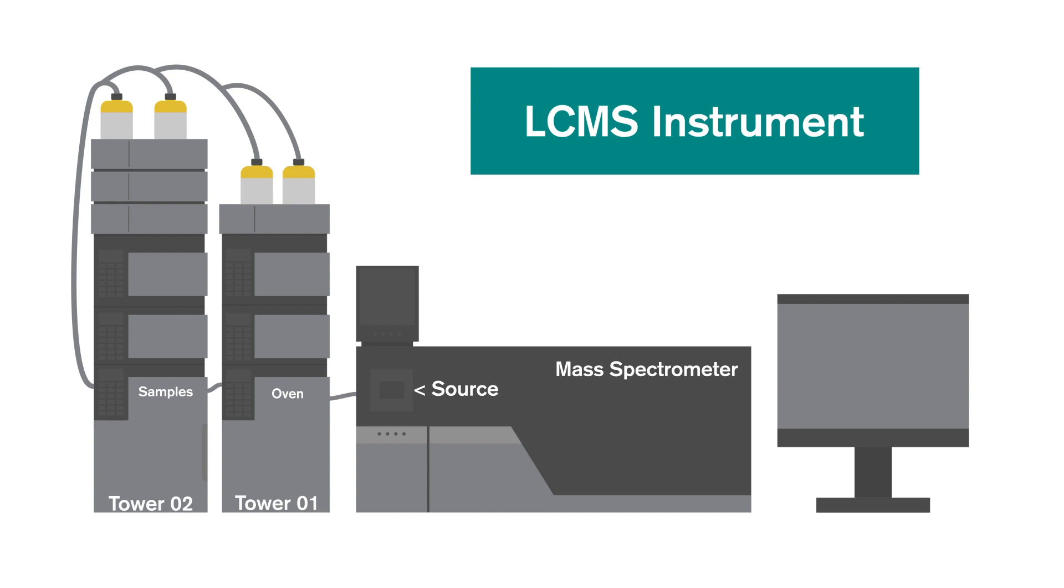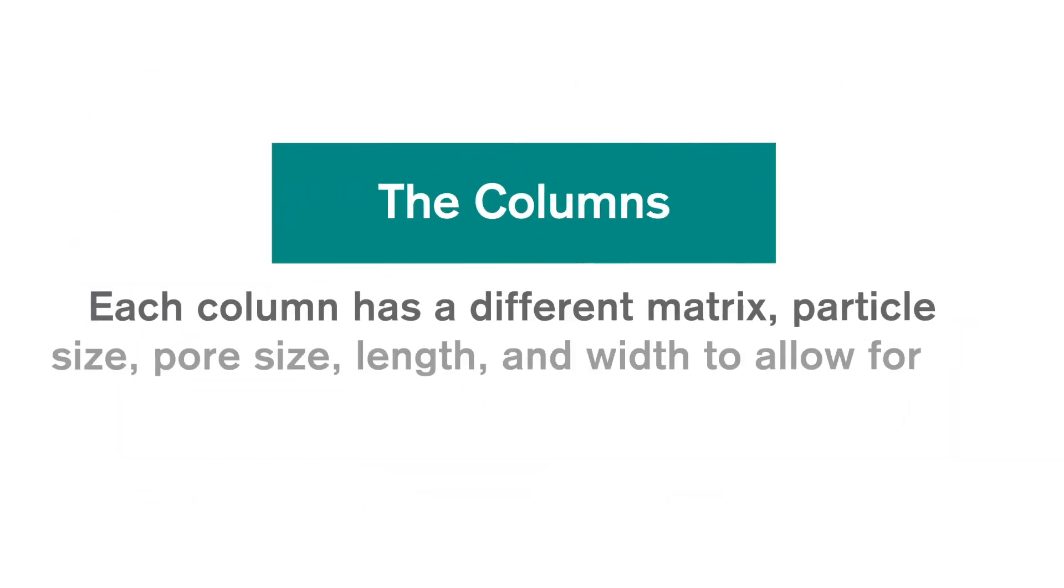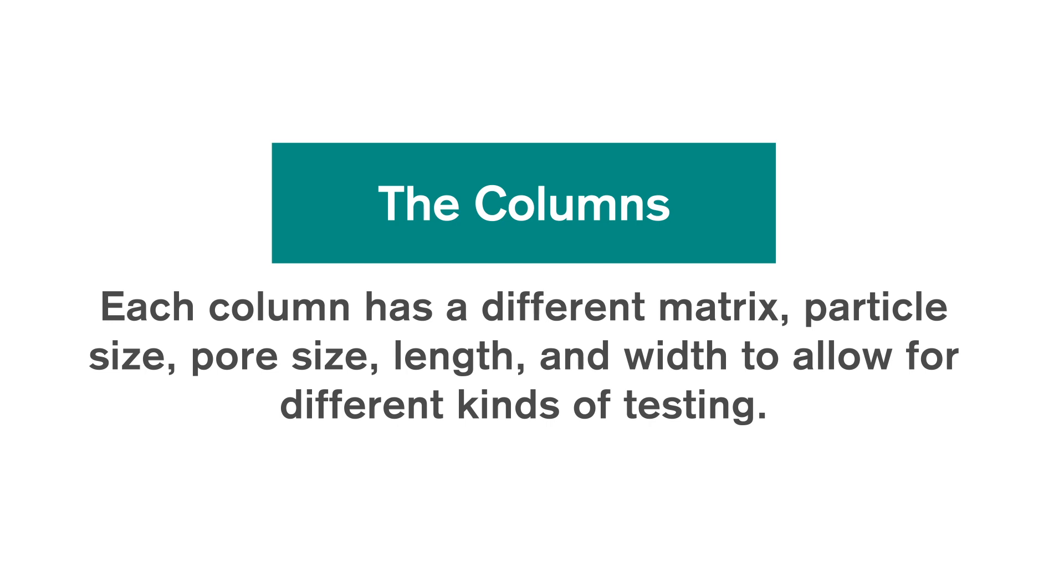The mobile phase helps the solubilized compounds to pass through a column packed with a solid phase. Our instrument has the capacity to host six columns in the column oven. Each column has a different matrix, particle size, pore size, length, and width to allow for different kinds of testing.